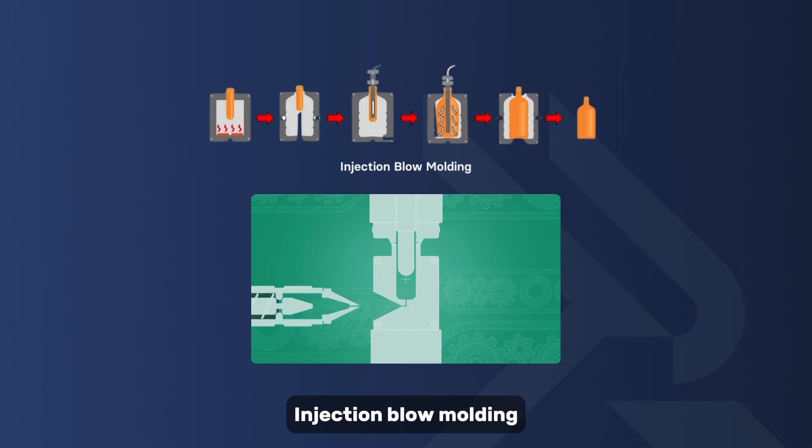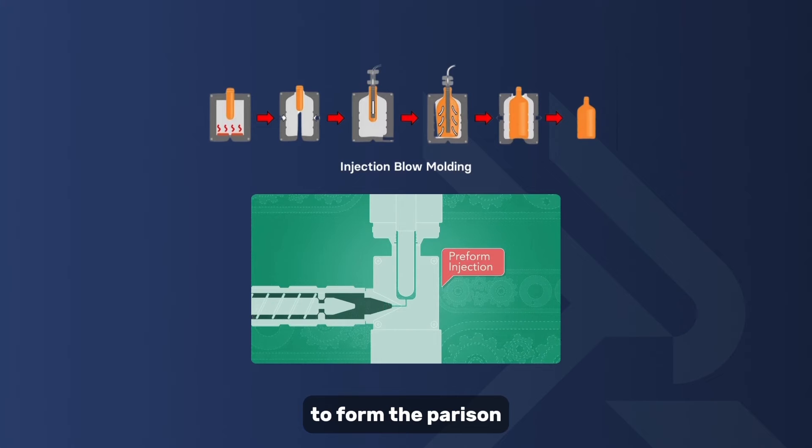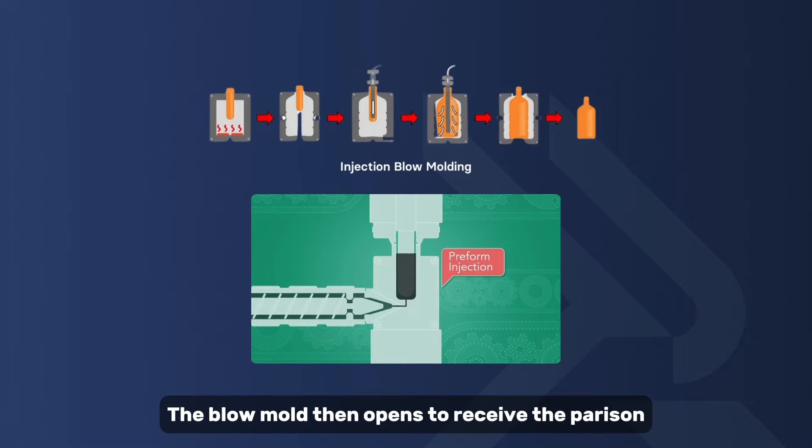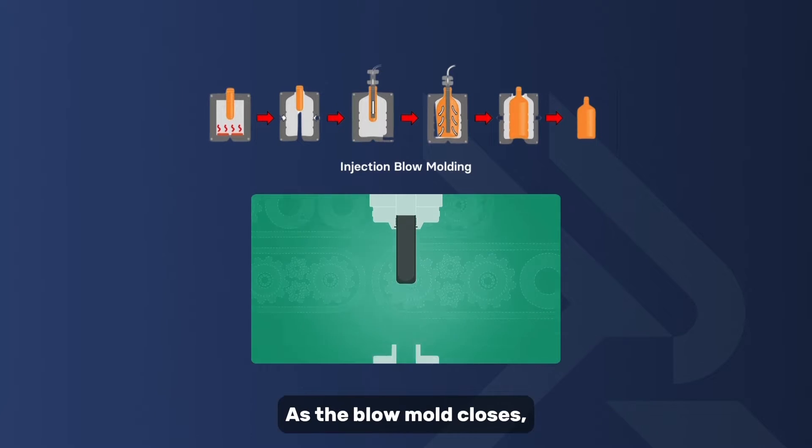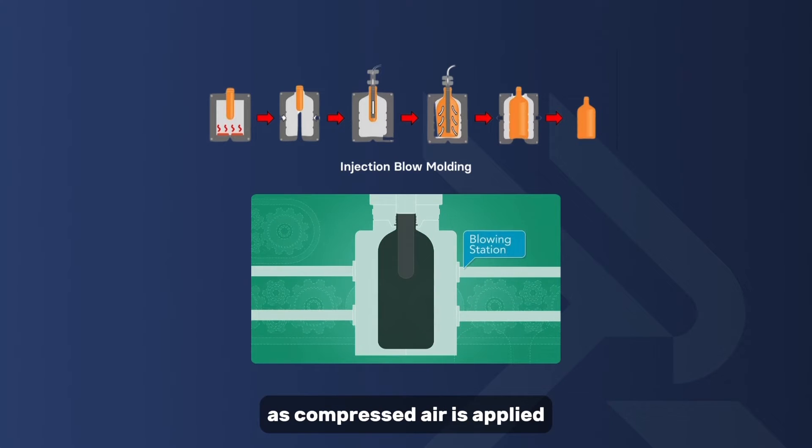Injection blow molding involves injecting the molten plastic upward into a split mold cavity to form the parison. The blow mold then opens to receive the parison. As the blow mold closes, the parison takes the shape of the mold as compressed air is applied.